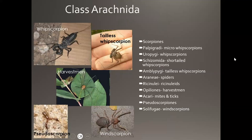Looking closely at Class Arachnida, common members include harvestmen — which people often mistake for spiders — as well as whip scorpions, tailless whip scorpions, wind scorpions, and pseudoscorpions.